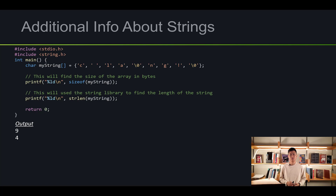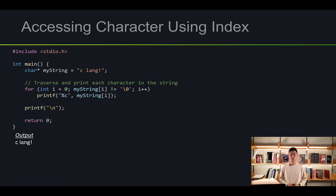Now I want to show you how we can access a string using index notation. I made a string called myString, then made a for loop that iterates until it reads the very first null character. Inside the loop, we print each element out, and it prints out 'C lang'.